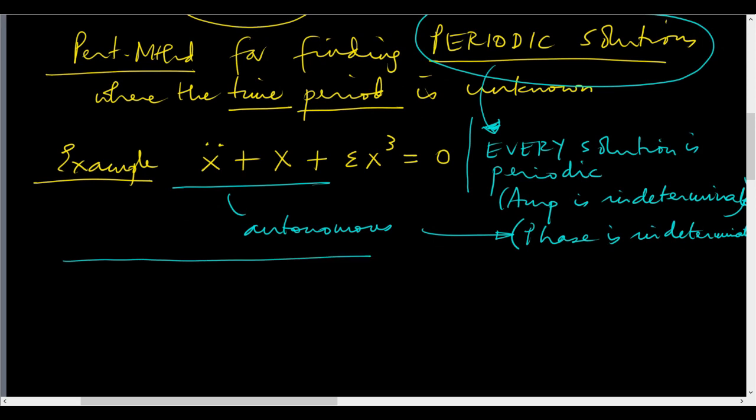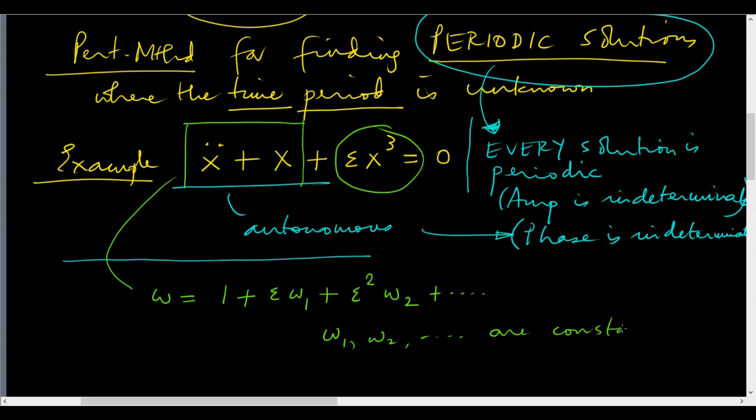But it is a small perturbation. It is a small perturbation of the harmonic oscillator and so we can think of omega as 1 plus epsilon omega 1 plus epsilon squared omega 2 plus dot dot dot. The omega 1, omega 2, etc. are constants, they are not functions of time, but dependent on amplitude.